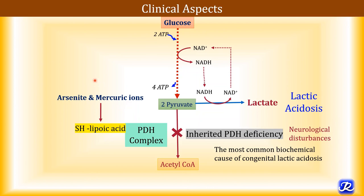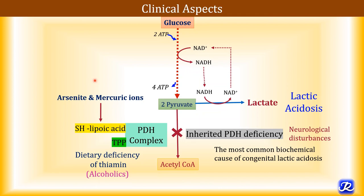Arsenite and mercuric ions interfere with the sulfhydryl groups of lipoic acid associated with the PDH complex, thus impairing its function. Thiamine pyrophosphate is a coenzyme of pyruvate dehydrogenase, so dietary deficiency of thiamine — most common in alcoholics, since alcohol inhibits thiamine absorption — leads to a defective PDH complex and lactic acidosis.